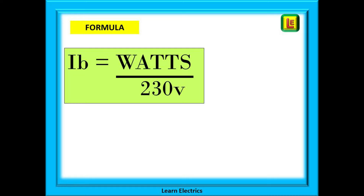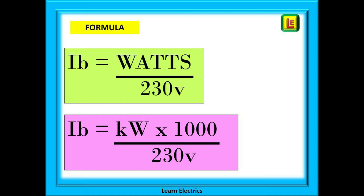The formula to use is very simple. Take the appliance rating in watts and divide it by 230 volts to give us the design current or IB. 230 volts is the nominal voltage rating for the UK — and yes, it is actually 240 volts when we measure it, but we use 230 volts for all our calculations. If the appliance rating is shown as kilowatts or kW, this just means thousands of watts. Take the kW figure and multiply it by 1000 before dividing it by 230 volts.